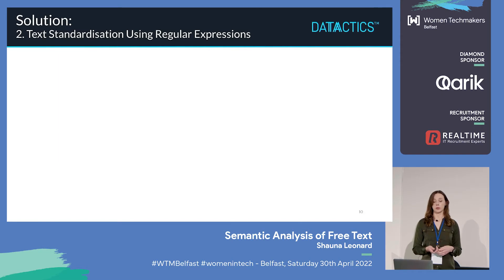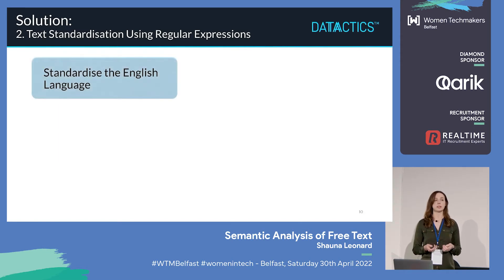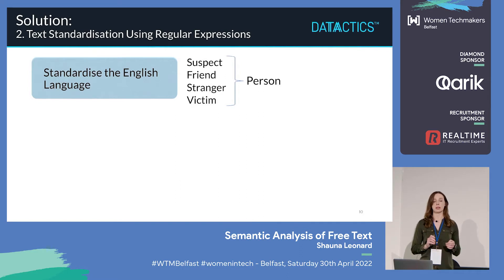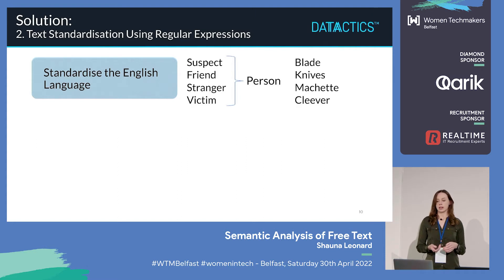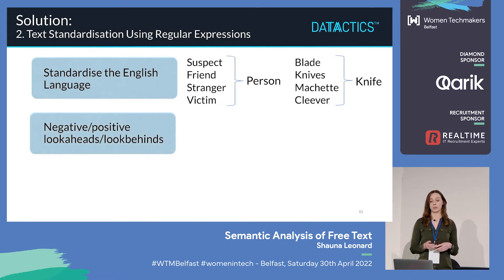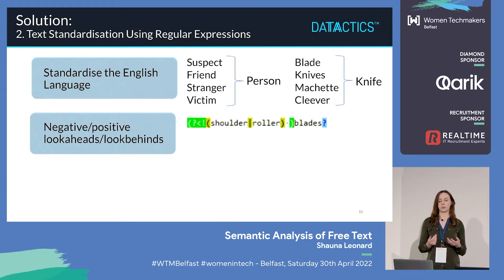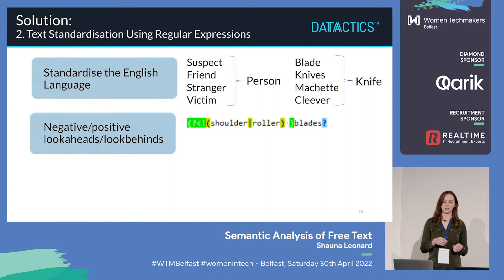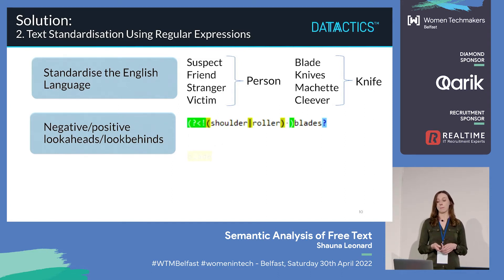Step two is text standardisation using regular expressions. We want to standardise the English language, which is harder than it sounds. We have a list of people — suspect, friend, stranger, or victim — and we want to standardise all of those just to 'person'. Any type of person, any occupation, just becomes 'person'. Blade, knives, machete, or cleaver, with their misspellings because you get typos — we want to standardise all of that to 'knife'. This is the basis of our dictionaries: a list of people, a list of knives, a list of verbs, prepositions — they'll all be standardised. We also make use of negative and positive look-aheads or look-behinds. For example, if we just want the word 'blade', it can be preceded by 'shoulder' as in shoulderblade, or 'rollerblades', so we don't want those to come through as a knife. We use a negative look-behind so the word preceding 'blade' is cancelled out. So 'shoulder blade' and 'rollerblades' are excluded, and only 'blade' alone is highlighted, meaning only that gets standardised to 'knife'.